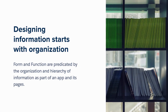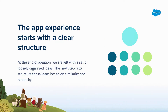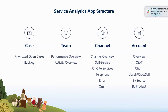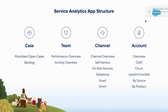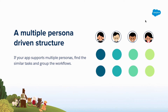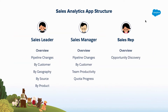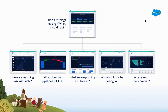We're starting to get more into the structure of the application now, and that really starts with organization. There are different ways of organizing your apps. You can think of it as a task-driven structure — in the case of our service analytics apps, we have organized by case, team, channels, accounts. Or you can think about it driven by personas — in the case of our sales analytics app, we have them organized by sales leader, sales manager, sales rep. The structure of your app starts to reflect that path of inquiry, where each page is answering a question. Your overview page might answer three or four questions that drive you down to secondary or tertiary questions.